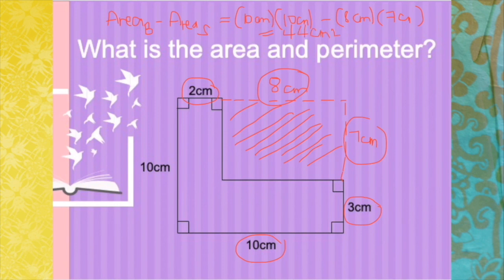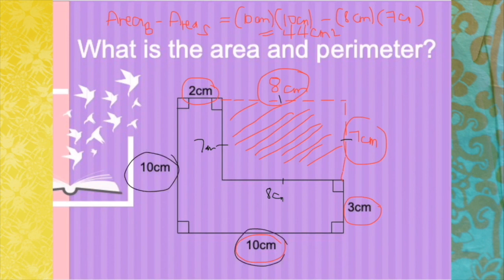Now how about the perimeter? The perimeter is simply adding all sides. Since this is equal, this is also 7 and this is also 8. So since there are 4 sides which total 10 each, therefore the perimeter will be 4 times 10 centimeters. That will give you 40 centimeters, which is our perimeter.